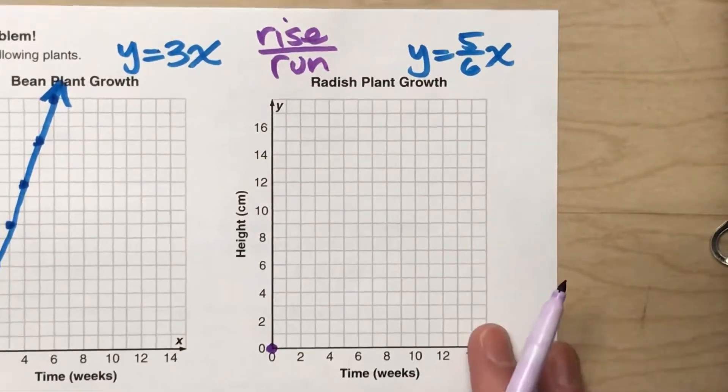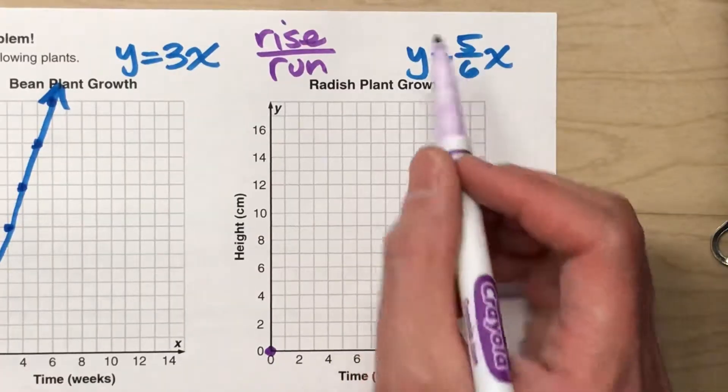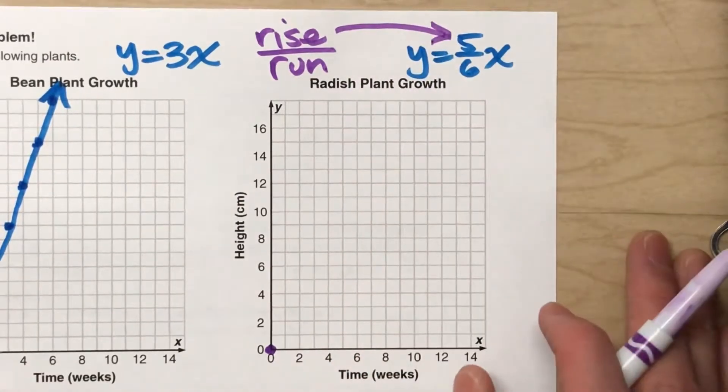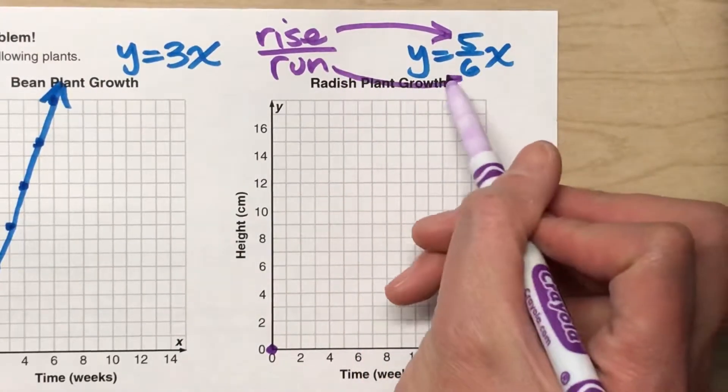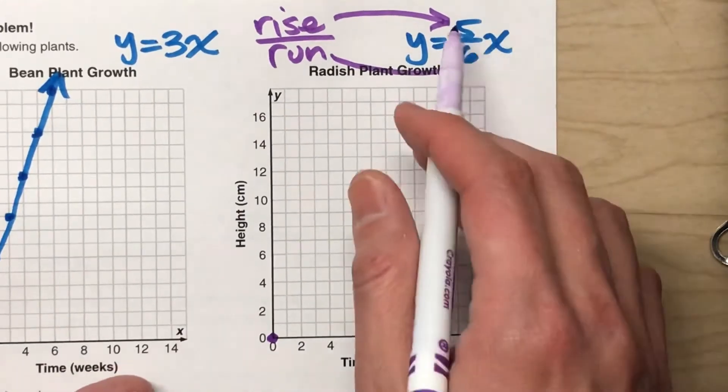So when your slope is a fraction, the number on top is the rise. That tells you how much to go up. And the number on the bottom is the run. It tells you how much to move to the right. So if I wanted to plot this,